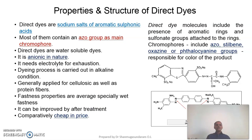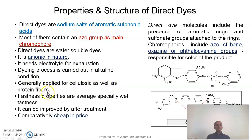Various after-treatments have to be carried out to improve the washing fastness of direct dyes material, as direct dyes generally do not meet today's more stringent washing fastness requirements. Direct dyes are sodium salts of aromatic sulfonic acids. Most of them contain an azo group as the main chromophore. Direct dyes are water-soluble and anionic in nature. They need an electrolyte for exhaustion. Dyeing is carried out in alkaline condition, generally applied to cellulosic and protein fibres. Fastness property is average to poor and comparatively cheap in price.